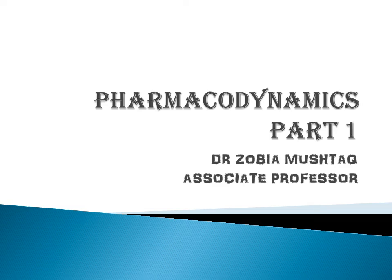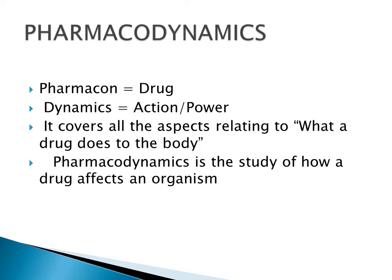Today we will discuss pharmacodynamics and important terms required to learn it. Pharmacodynamics is made up of two words: pharmakon and dynamics. As mentioned in the lecture on pharmacokinetics, pharmakon is a Greek word meaning drug. Dynamic means action or power. So in simple words, pharmacodynamics is the action or power of the drug.